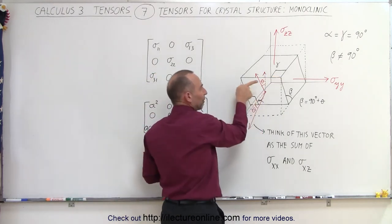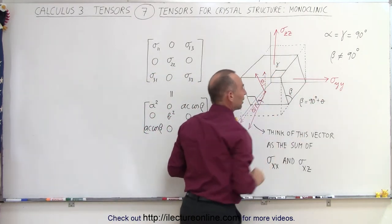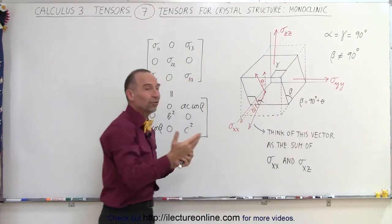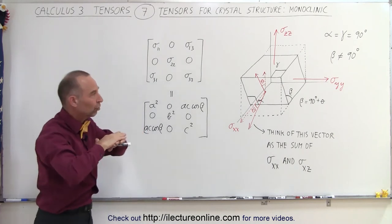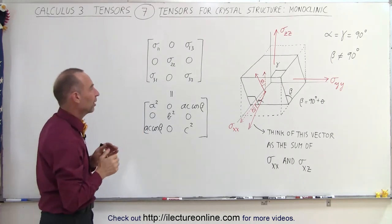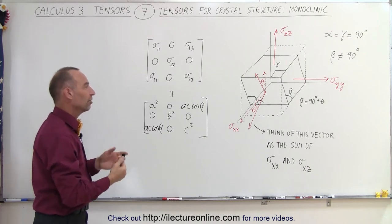One for pointing in the x direction, one for pointing in the y direction, one for pointing in the z direction. Notice that in the y and the z direction, we still have no difference there. The perpendicular to the surface will be in the z direction here, and will be in the y direction there. But in the x direction, things have changed now.